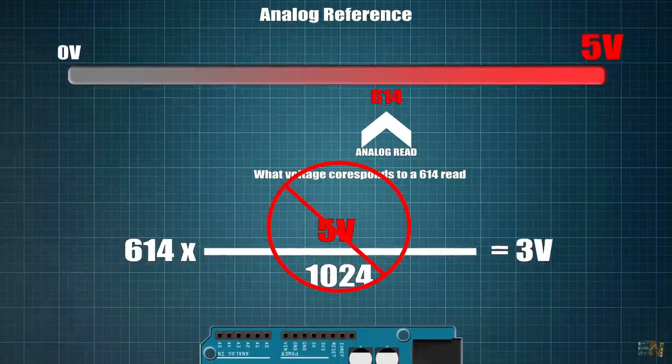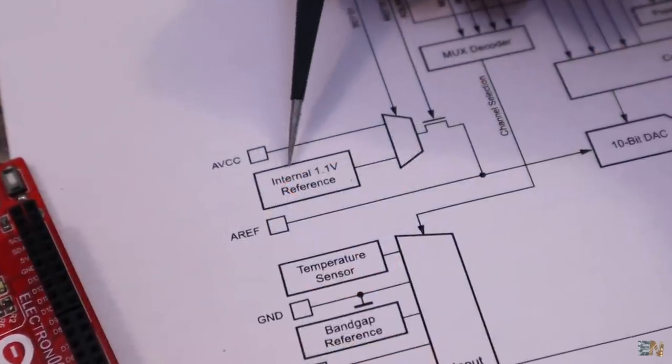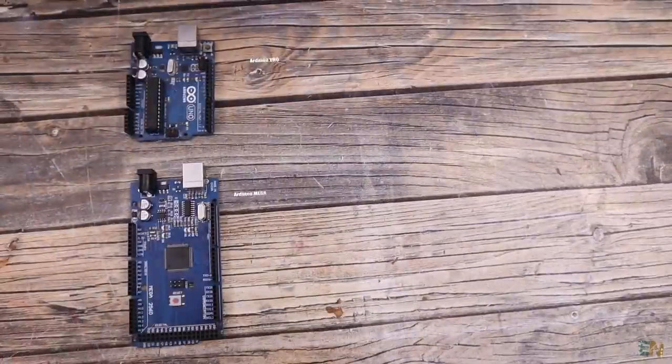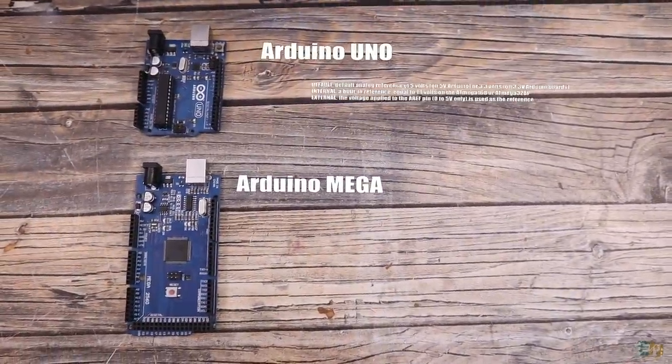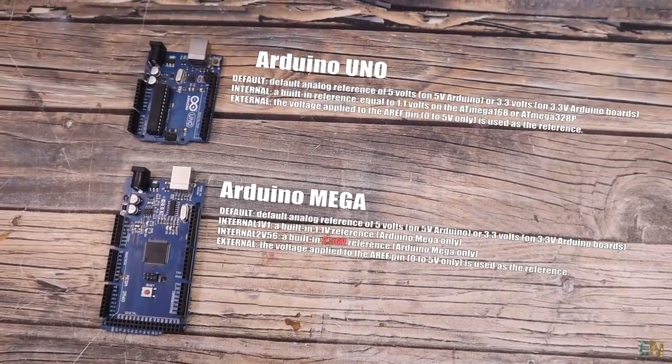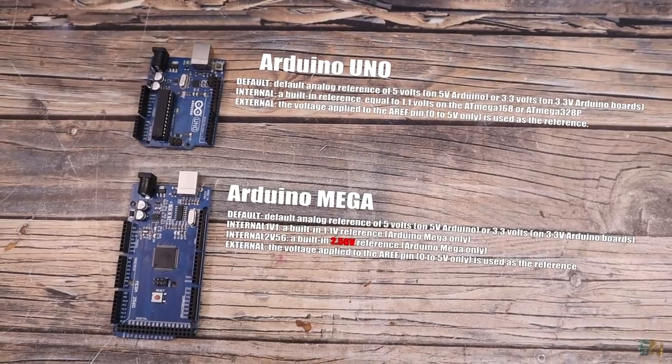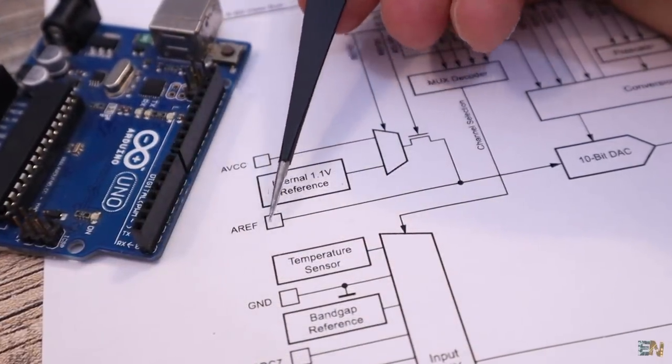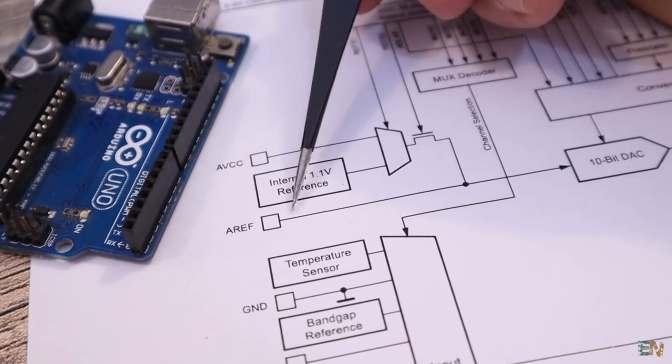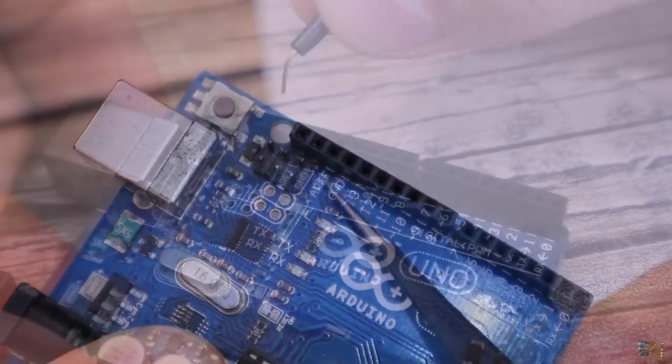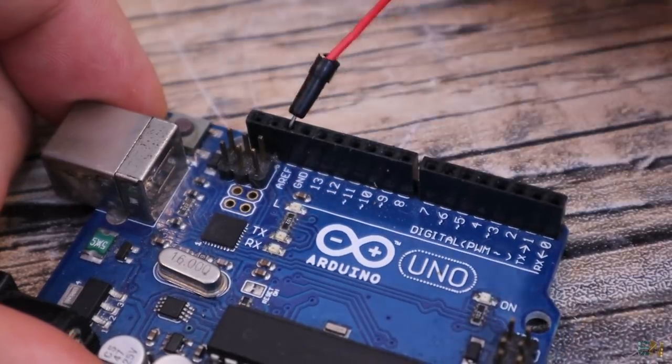For some more precise reads, the Arduino chip has an internal voltage reference that usually is more precise. For the Arduino Uno we have a 1.1V internal reference but the Arduino Mega also has a 2.56V reference. The reference could also be external and in this case, it would be any voltage that you connect at the AREF pin of the board. So if you connect for example 3V, the reference would be 3V.